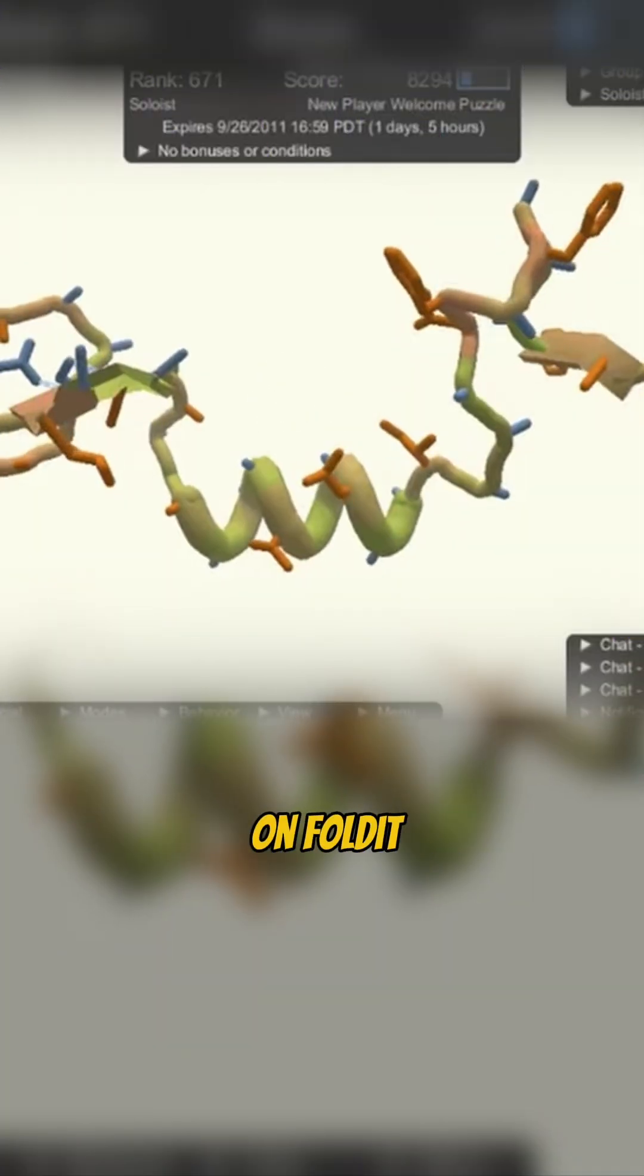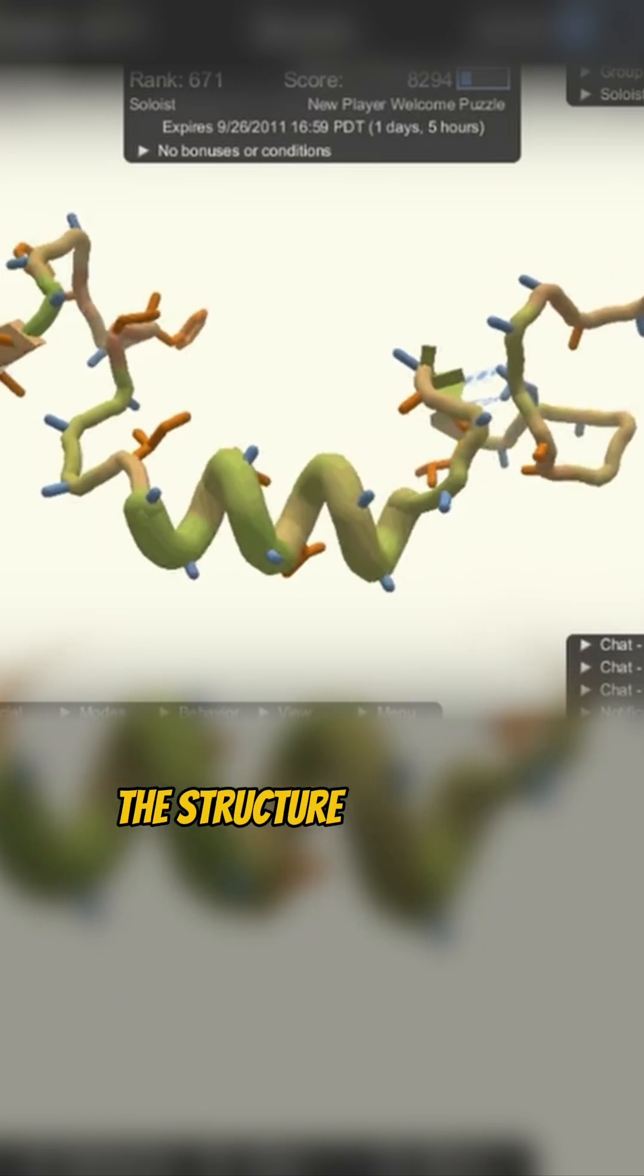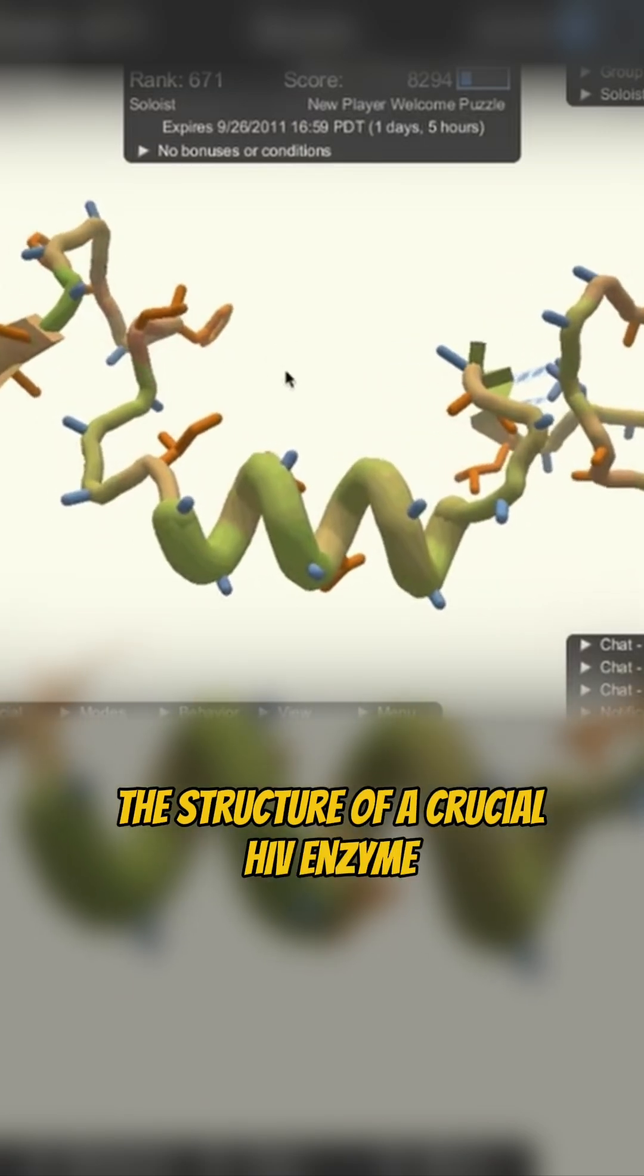Citizen scientist gamers on Foldit accomplished what seasoned biochemists couldn't: crack the structure of a crucial HIV enzyme.